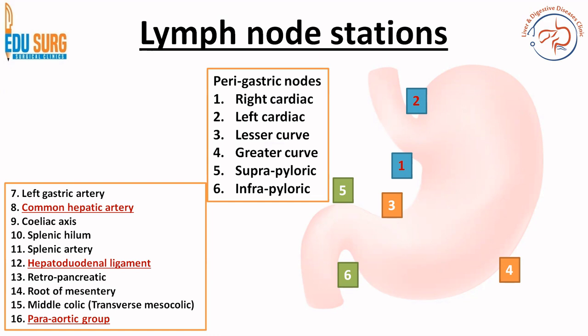Starting with the perigastric nodes: right and left cardiac, then lesser and greater curve, suprapyloric and infrapyloric. These numbers were basically from the Japanese gastric cancer staging system which have also now been taken up by AJCC. So perigastric nodes: right and left cardiac, lesser and greater curve, suprapyloric and infrapyloric.